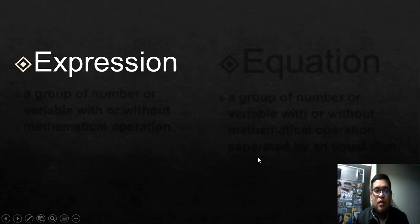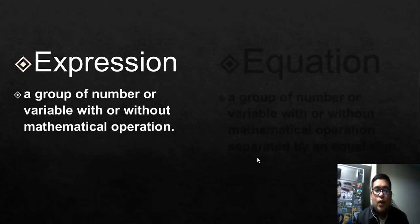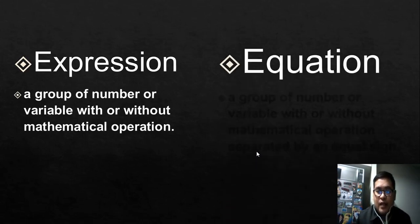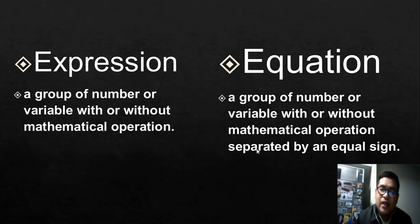While expression is a group of number or variable with or without mathematical operation. Again, a group of number or variable with or without mathematical operation. While equation is a group of number or variable with or without mathematical operation separated by an equal sign. That's why it's called equation. So there's a big difference between expression and equation.